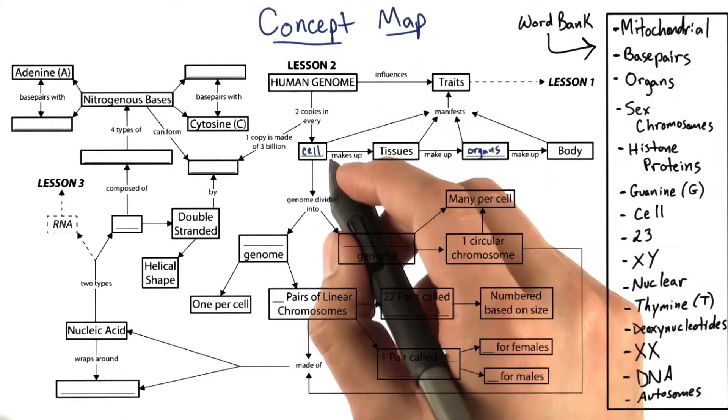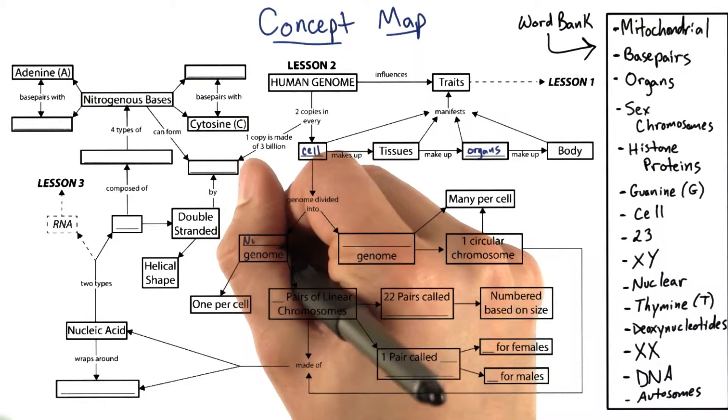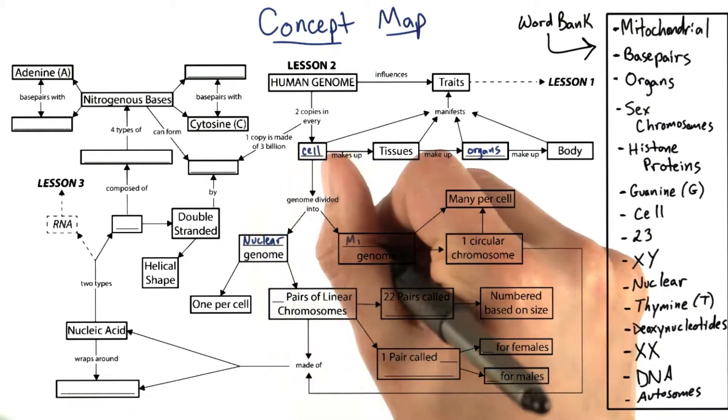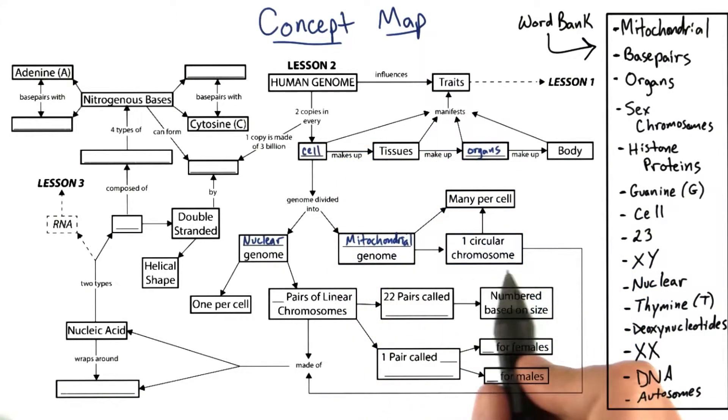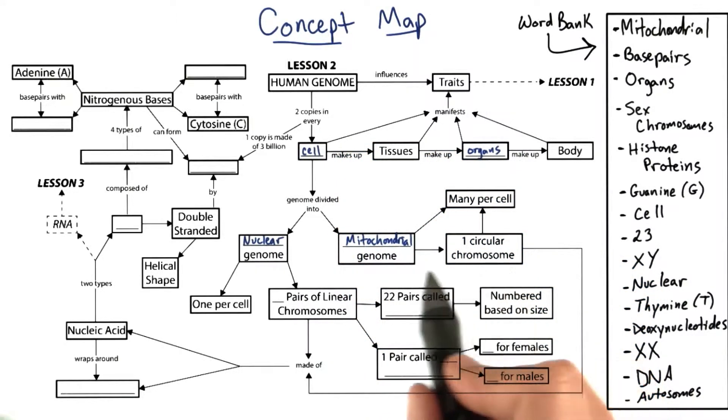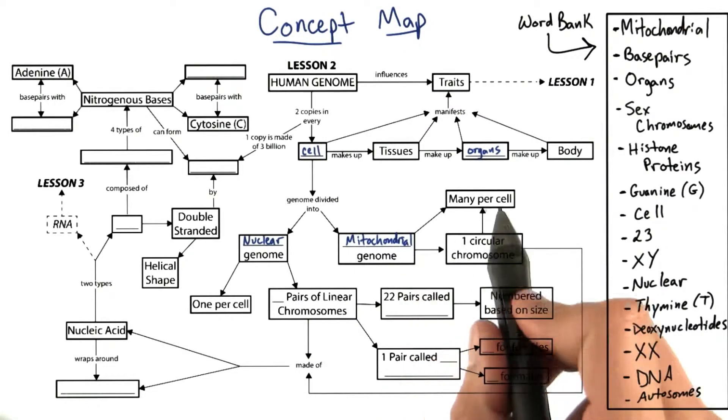The human genome resides in the cell and can be divided into the nuclear genome and the mitochondrial genome. The mitochondrial genome has one circular chromosome per mitochondria, and there are many mitochondria per cell.